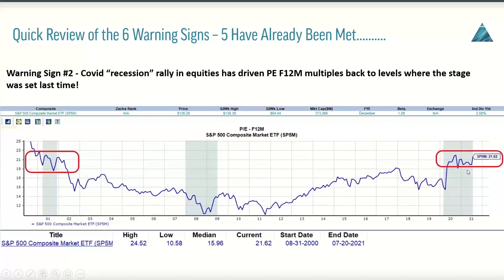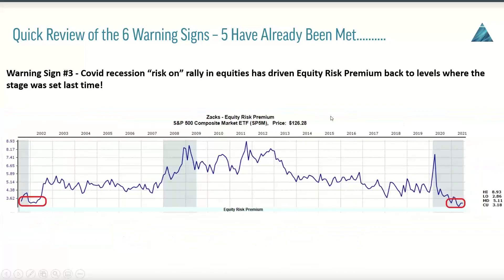Warning sign number three was that the COVID recession risk-on rally in equities has literally pushed equity risk premium back to levels where we had set the stage last time. You can see equity risk premium sitting at pre-dot-com levels — about the same level now — with roughly the same levels of elevated PEs in both time periods. There is a huge correlation and statistical significance with equity risk premium being able to explain the movement in the S&P 500 PEF-12M, and a lot of statistical insignificance around 10-year treasuries.